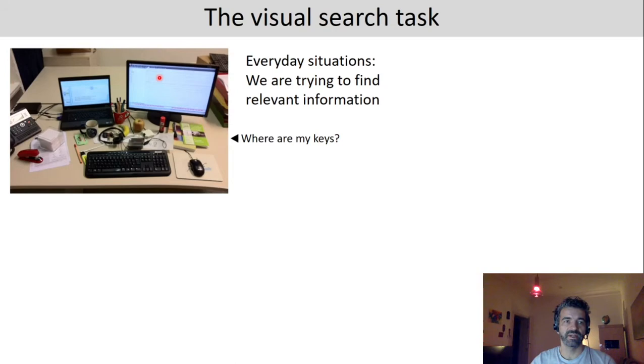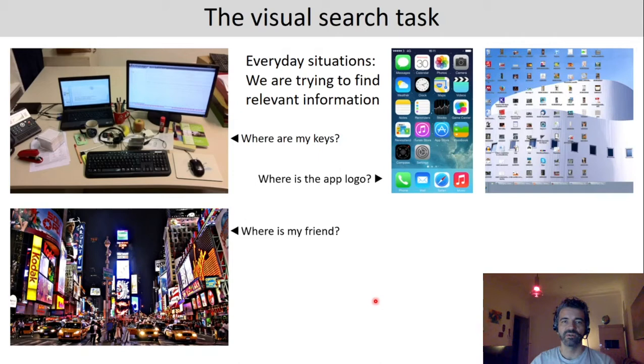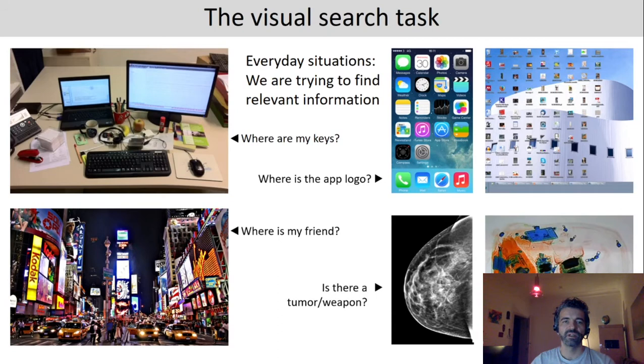As an example you're at your desk and you want to go home from work and you need to find your keys, you need to search them on your desk and try to ignore all other objects. Or you're at Times Square and you want to find your friend. Or you're looking for a specific app on your phone or a program on your desktop. And sometimes visual search can even be a matter of life and death. For example when you're a doctor who screens women for breast cancer they need to detect tumors in ultrasound images. Or if you're a security officer at an airport you need to detect and find weapons in x-ray luggage images.